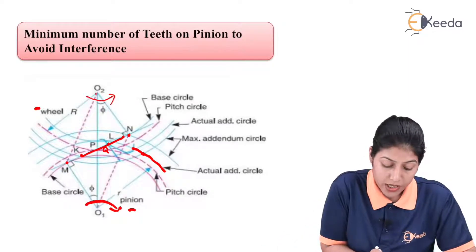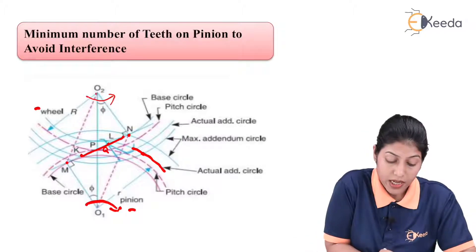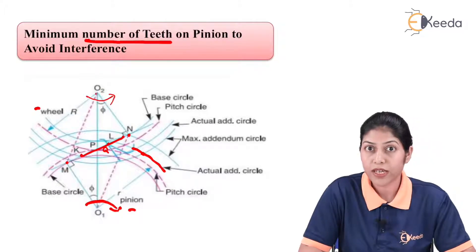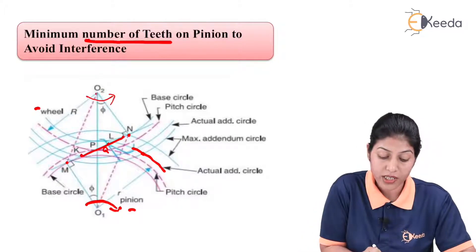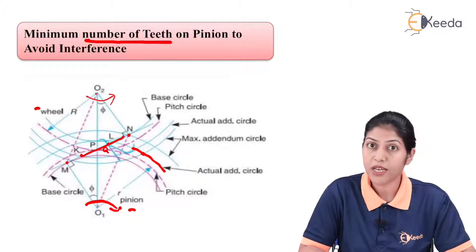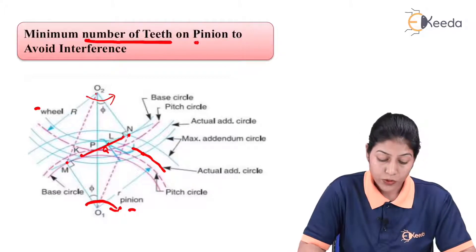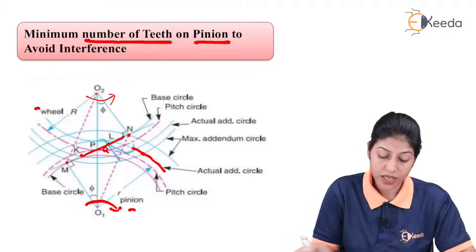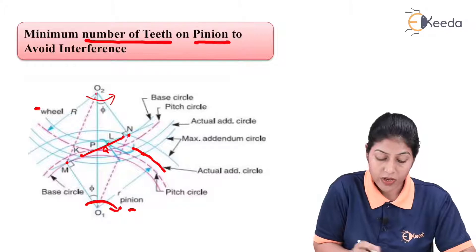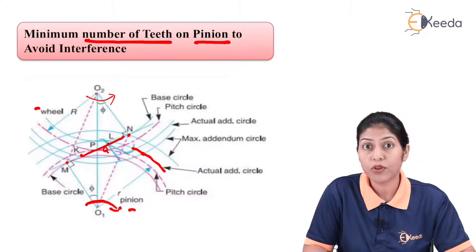There is another factor involved in avoiding interference: the number of teeth. Based on the number of teeth, we can define interference, and to avoid it there must be a definite minimum number of teeth on the pinion and the wheel. For the driving gear — the pinion — we need to define how many teeth it should have. Using this diagram, we will define the total number of teeth on the pinion.